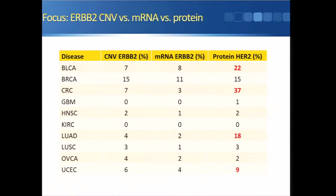Not surprisingly, in many diseases we don't see protein expression levels high in more than 5% of samples. But in some diseases where more than 5% of samples had HER2-positive protein expression levels, we saw that compared to copy number and mRNA, proteins predicted a much greater number of samples with high HER2 levels. For example, in bladder cancer, only 7% were HER2-positive by copy number, 8% by mRNA, but 22% by protein.